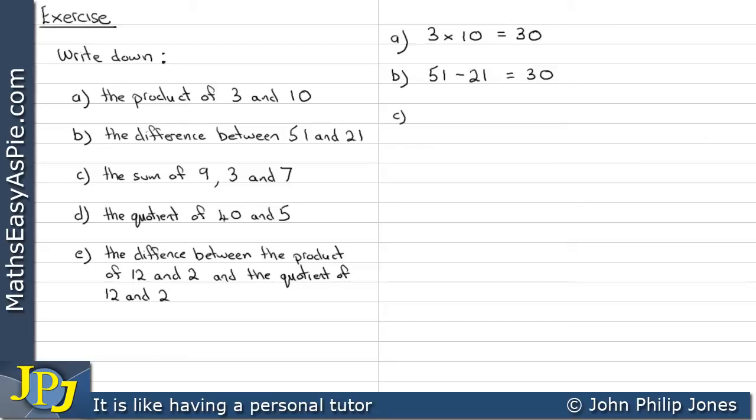If we consider C, it's asking us to find the sum of 9, 3, and 7. So what we do here, we write the 9, the 3, and the 7 down, as you can see, and we simply add them up. Now 9 plus 3 is 12, and then we add the 7 to get 19. Simple as that.